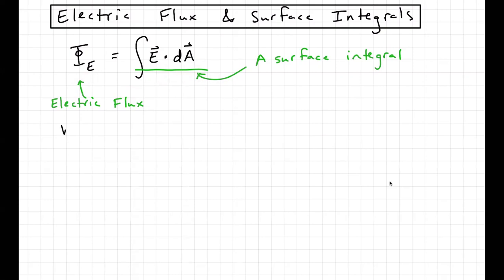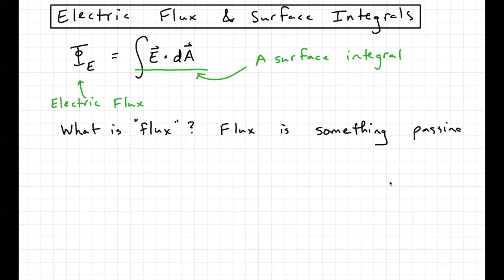So what is flux? Basically, flux is something passing through a surface. That word 'something' is intentionally vague, because in the case of electric flux, that something is electric field. In the case of other types of flux, it might be something easier to hold on to.